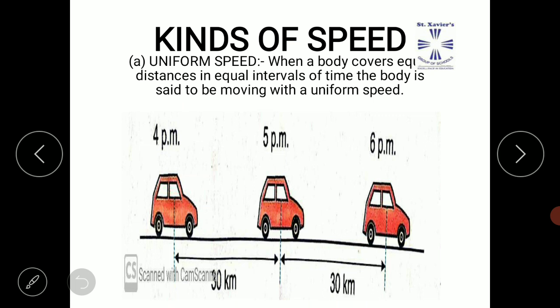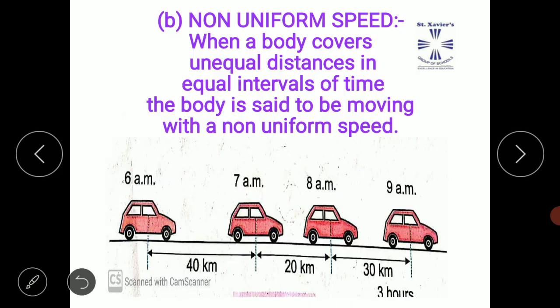Now, kinds of speed. We will be learning about two kinds of speed: uniform speed and non-uniform speed.